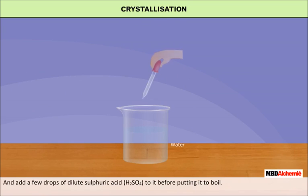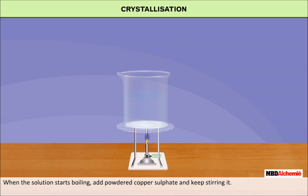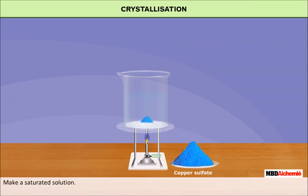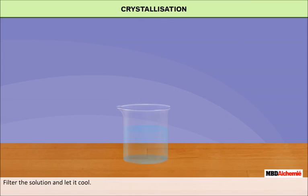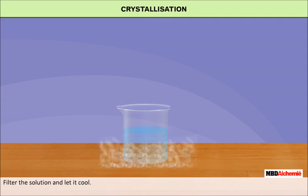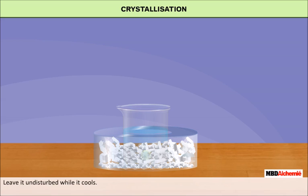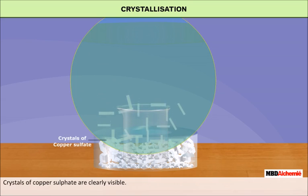Add a few drops of dilute sulfuric acid (H₂SO₄) to water in a beaker and bring it to a boil. When the solution starts boiling, add powdered copper sulphate and keep stirring to make a saturated solution. Keep adding copper sulphate until no more can be dissolved, then filter the solution and let it cool undisturbed. You will now observe clearly visible crystals of copper sulphate forming.